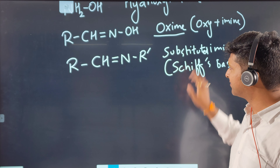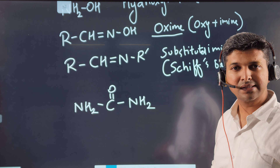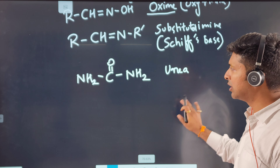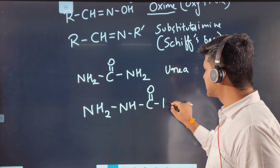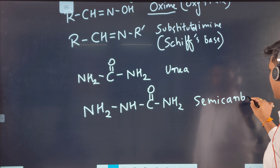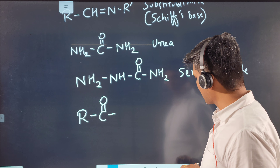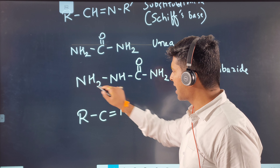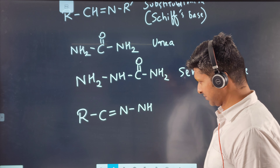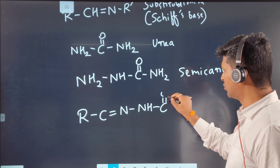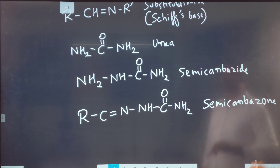Can you identify this next functional group? It is urea. If you attach one more NH₂ to urea, it becomes semicarbazide. Now if you attach RC=O — that is RC double bond N — the H₂ goes and remembering that the valency of nitrogen is three, we get C=O–NH₂, and it is no longer semicarbazide; it becomes semicarbazone.